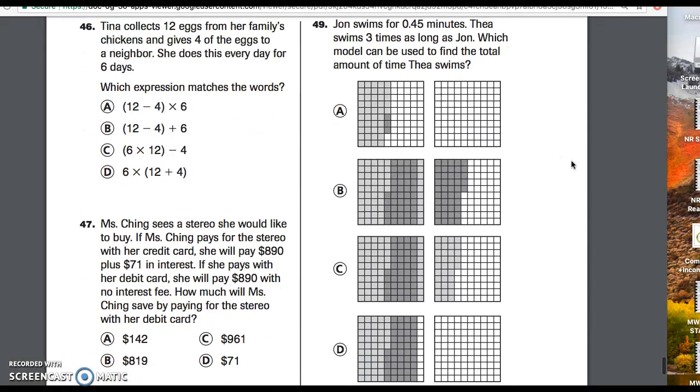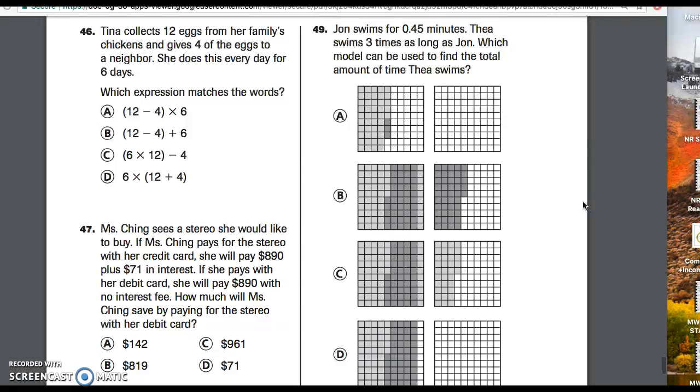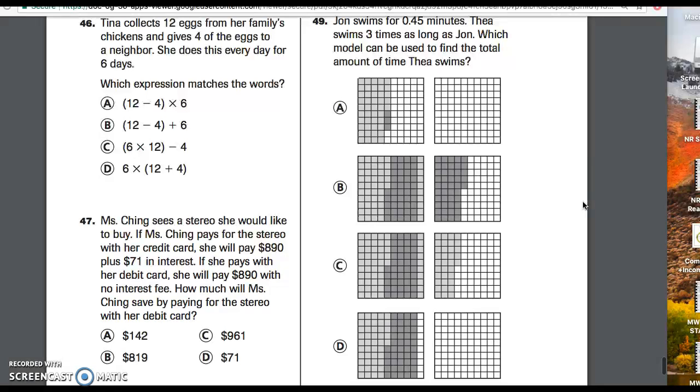Number 49. John swims for 45 minutes. Thea swims three times as long as John. Which model can be used to find the total amount of time Thea swims?